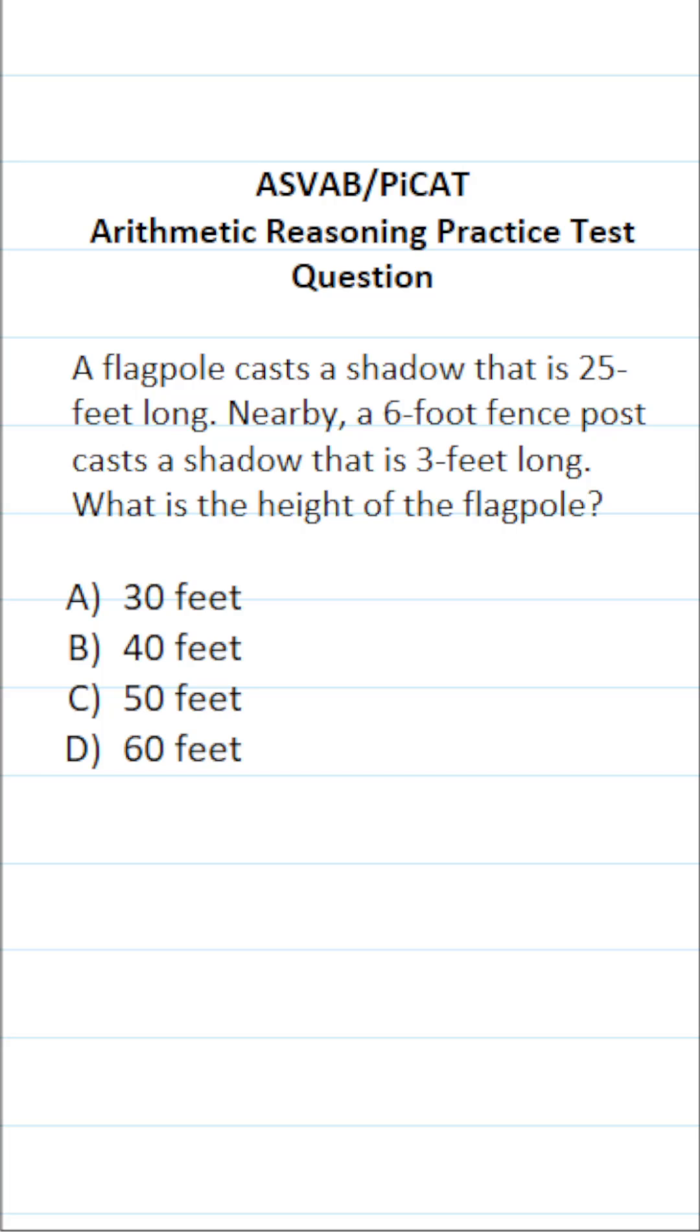This arithmetic reasoning practice test question for the ASVAB and PICAT says: a flagpole casts a shadow that is 25 feet long, nearby a 6-foot fence post casts a shadow that is 3 feet long. What is the height of the flagpole?